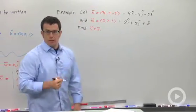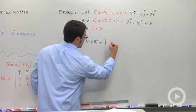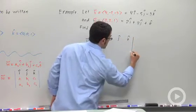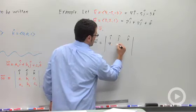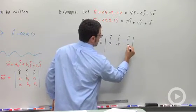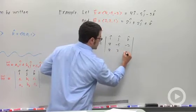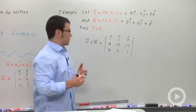And then V cross W is the determinant I, J, K. So you always put I, J, K across the top. And then 4, negative 5, negative 3, those are the components of V. And then the components of W, 2, 2, and 1. And you expand this the way you would a normal determinant.